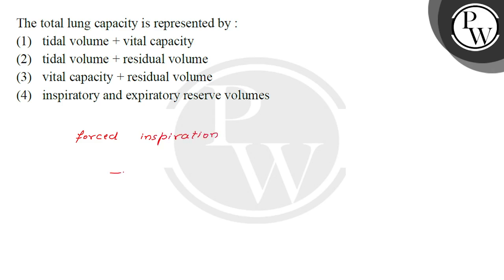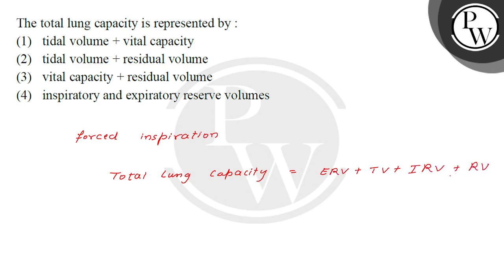So if we have to write total lung capacity, it is the total of ERV plus TV plus IRV plus residual volume. Because residual volume remains in the lungs and you can't expel it. You also know ERV, TV, and IRV.